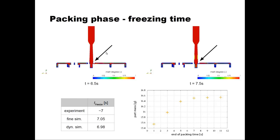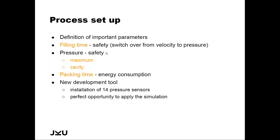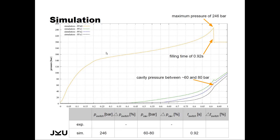Now, for safety reasons when switching from velocity to pressure control, we also want to know the maximum pressure values at switch-over — that is a safety feature so we don't destroy the machine. We also want to know the packing time for energy consumption. The simulation, run the day before the mold was set up, calculated a maximum pressure of 246 bar, a filling time of 0.92 seconds, and cavity pressure at the three locations between 60 and 80 bar.